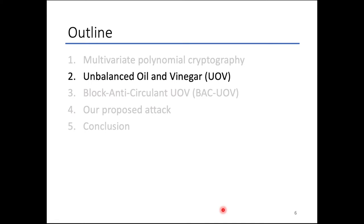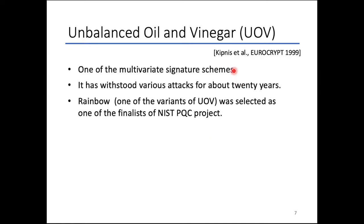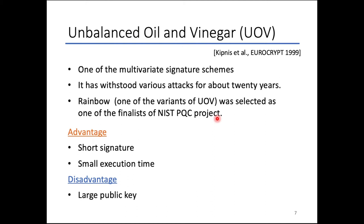Next, I explain the unbalanced oil and vinegar signature scheme. Unbalanced oil and vinegar, which is called UOV, is one of the multivariate signature schemes, and it has resisted various attacks for about 20 years. Actually, Rainbow, which is one of the variants of UOV, was selected as one of the third-round finalists of the NIST PQC project. UOV is highly evaluated for its short signature and small execution time, but it has a problem that its public key size is much larger than other candidates of PQC.